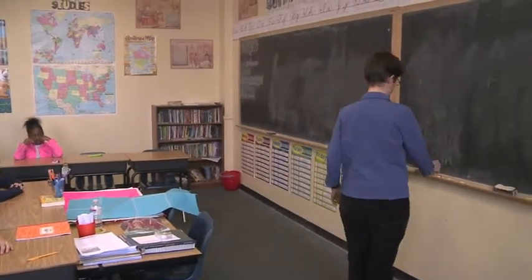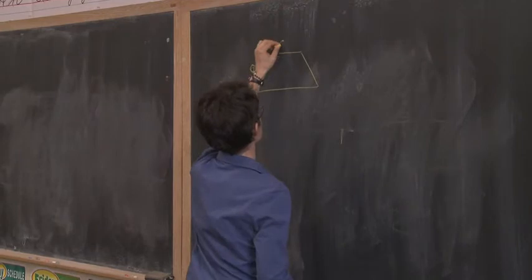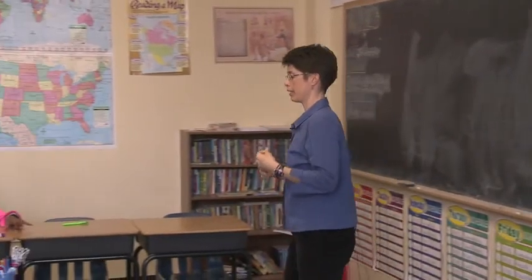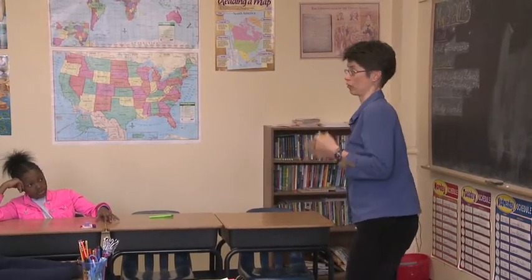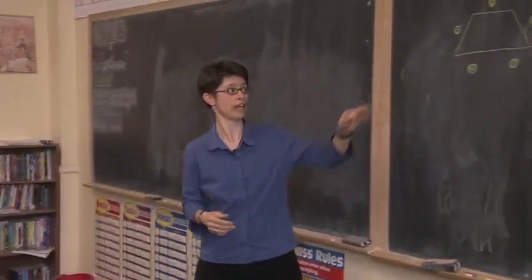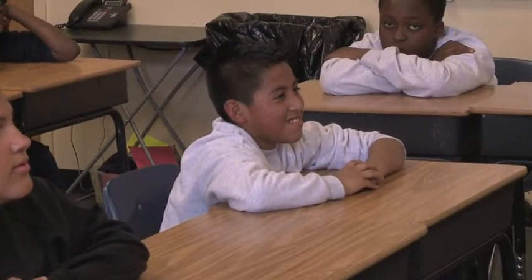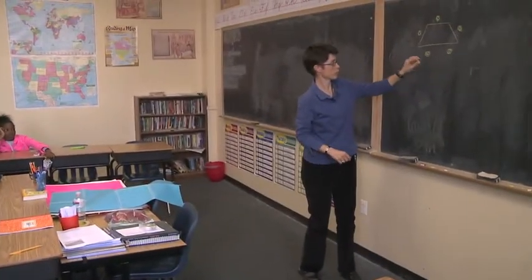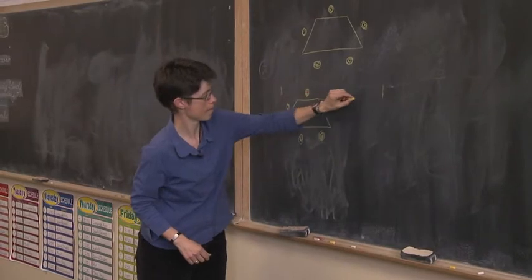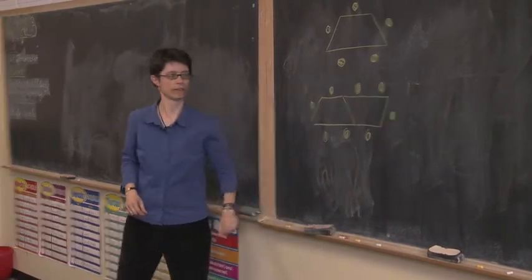I'm going to start by drawing. So this is a table. Every year at this one school, the parents have a special tea for the teachers because the teachers are special. They set up tables in the cafeteria. Here's one of the tables — it's the shape of a trapezoid. Who knows what shape that is? So there's two tables.